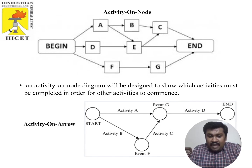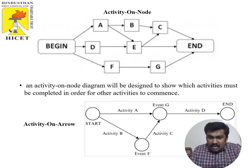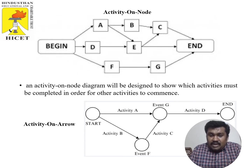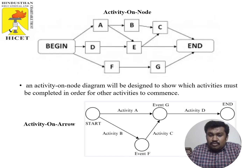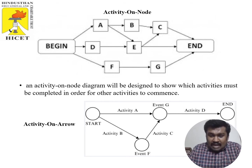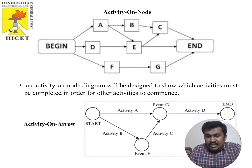From the diagrams we can easily differentiate Activity on Node and Activity on Arrow. In Activity on Node, there is a node called 'Begin' and several nodes in between: A, B, C, D, E, F, and G, and finally 'End'. Once started, it goes to either A, D, or F as indicated by arrowheads. A must be completed before proceeding to B and E. Similarly, C starts once B and E are complete, finally ending the task.